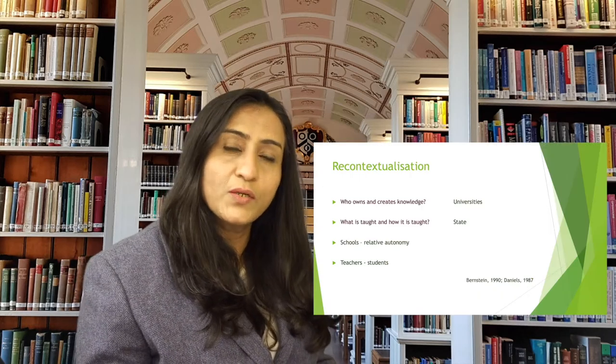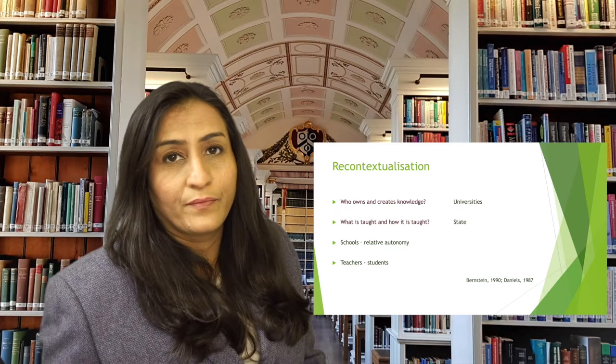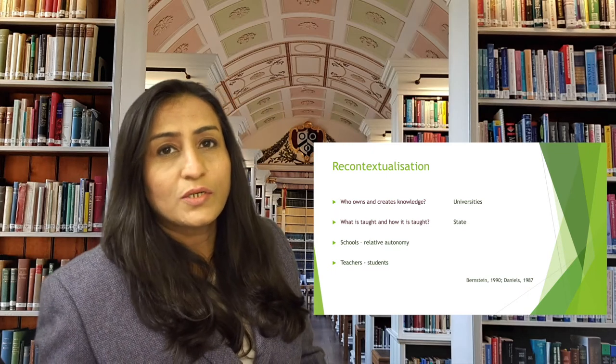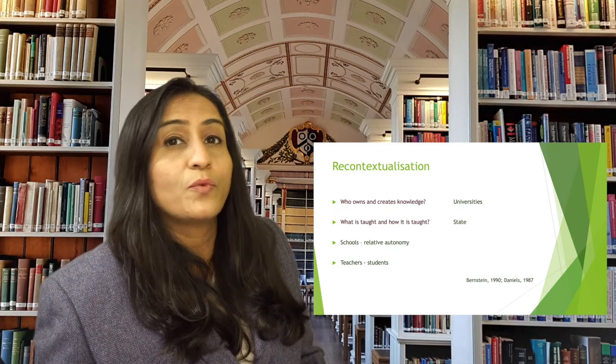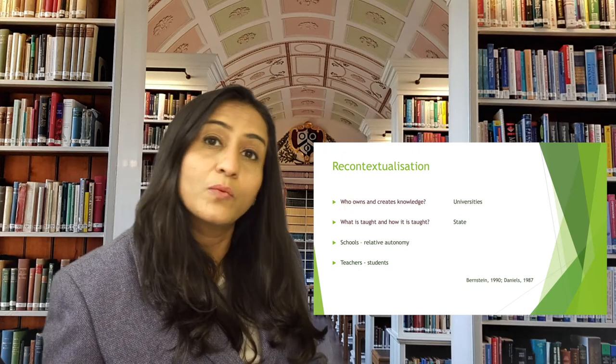The big question is: how is knowledge legitimized in order to be valid for transmission and realization? This is what Bernstein refers to as the process of recontextualization, and it answers several questions. At the first level, the question is: who owns knowledge? At this stage, knowledge is owned by intellectual communities — for example, universities.